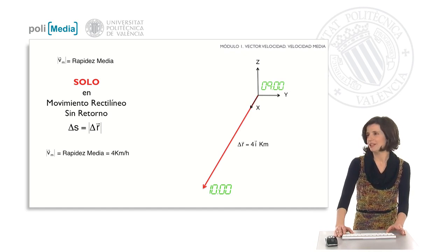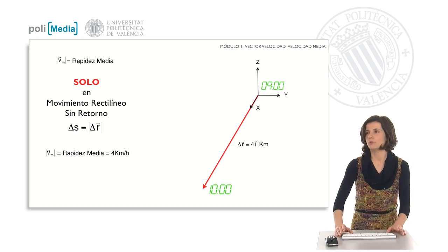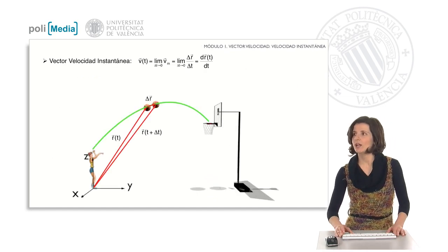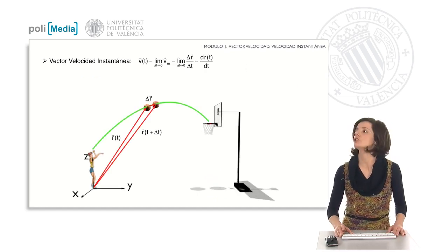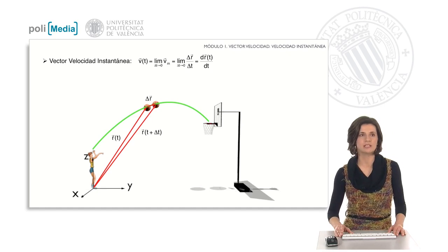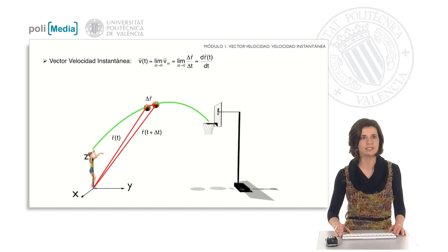But would they always have been going 4 kilometers per hour? The important thing is that they made it to the basketball court, and one of Jay's shots will help us to continue learning about speed.